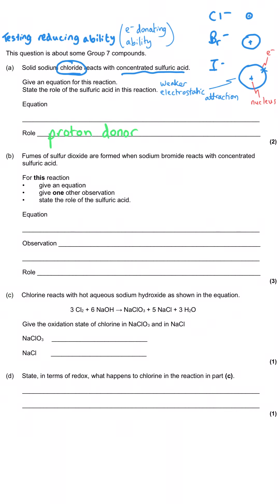Instead, sodium chloride reacts with sulfuric acid in an acid-base reaction — the sulfuric acid acts as a proton donor — producing sodium hydrogen sulfate and hydrogen chloride. This is not a redox reaction because the sulfur is +6 in H₂SO₄ and remains +6 in sodium hydrogen sulfate. All three sodium halides would undergo this reaction, but sodium chloride only does this because its small size means it holds onto its electrons very strongly.